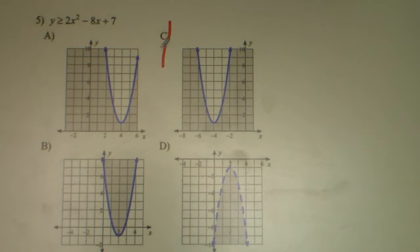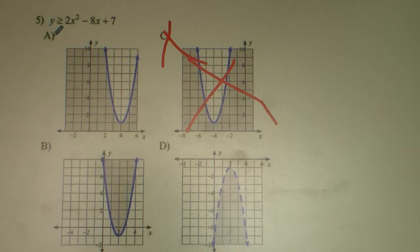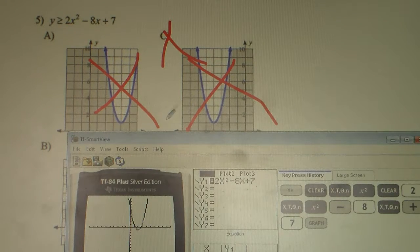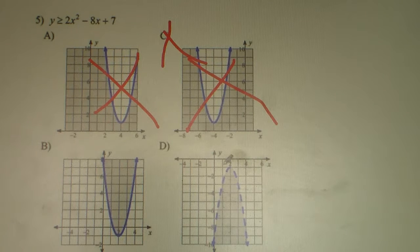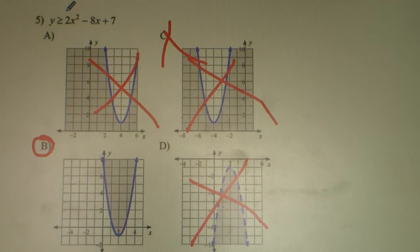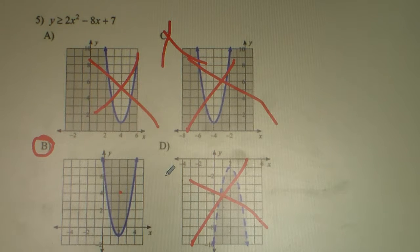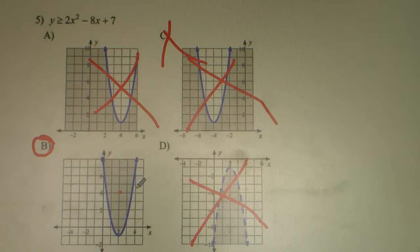Our parabola — option C has the parabola in quadrant 2, which is not correct. Option 5A has the parabola all in quadrant 1, but that's not what the graphing calculator shows. It shows it's mostly in quadrant 1, but the vertex dips into quadrant 4. So it would be B — that's what our picture looks like. Now for the inequality, Y is greater than or equal to the parabola. Greater than is above, so it's going to be shaded above the U and everything inside the U.